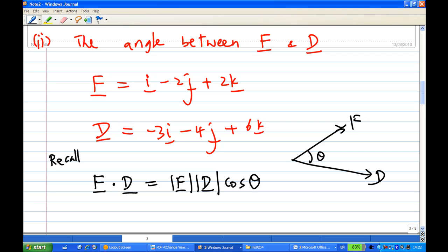Let's find out using this method. F dot D is equal to: there's a 1 here and a minus 3, you get minus 3, and a minus 2 and a minus 4 all together get plus 8, and a 2 and a 6 here, you get 12. This is F dot D.